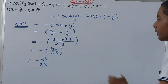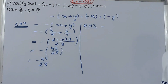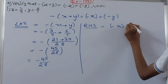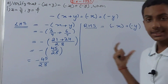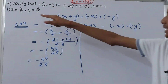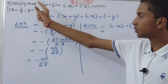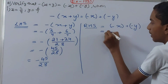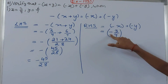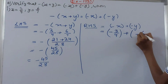Now we move to the right hand side, which is minus x plus minus y. We solve each part separately to avoid confusion. Minus x: since x is 3/4, minus x is minus 3/4. Similarly, y is 6/7, so minus y is minus 6/7. So the right hand side becomes minus 3/4 plus minus 6/7.